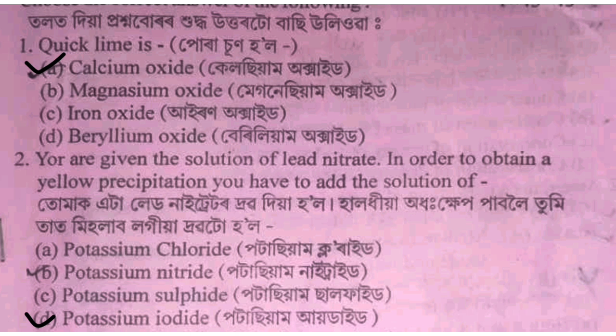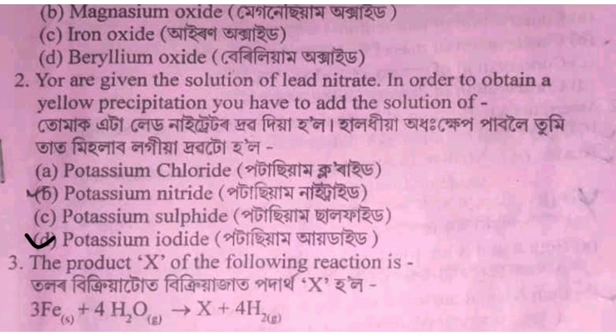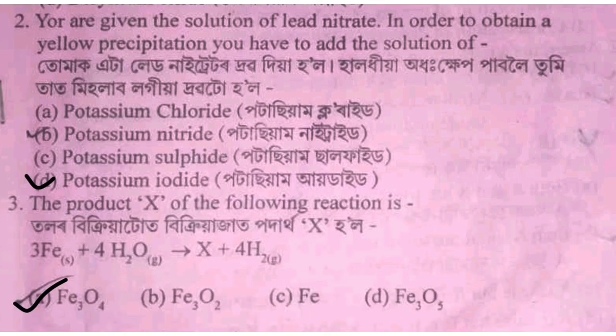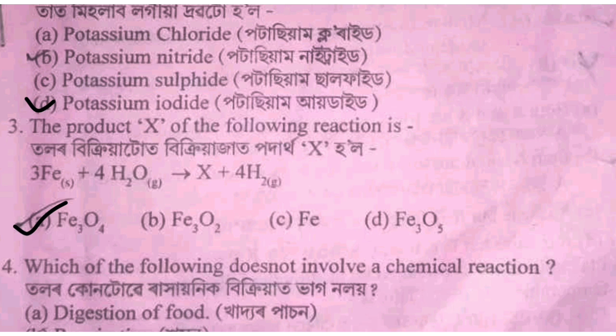Which of the following reaction produces iron oxide and hydrogen gas? The answer is option A: Fe3O4.